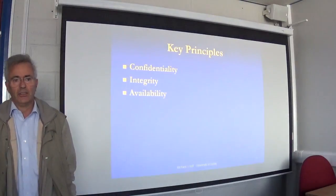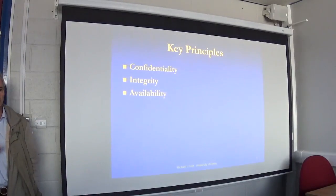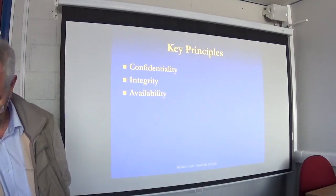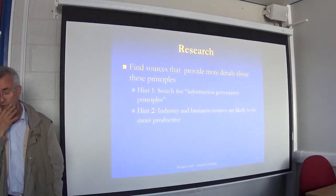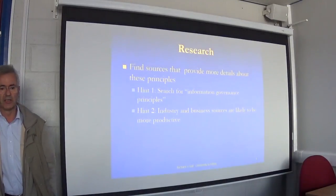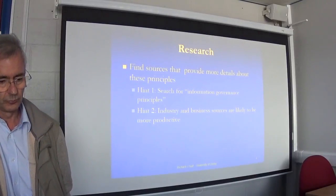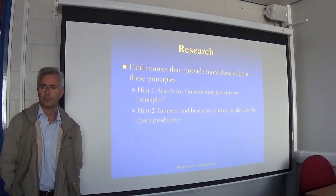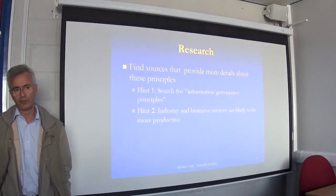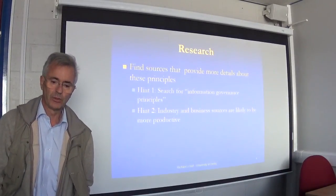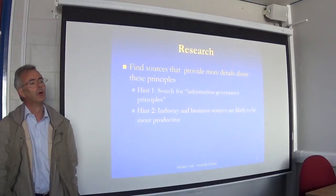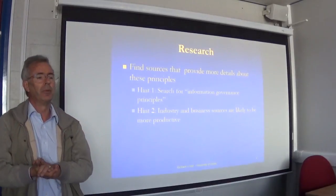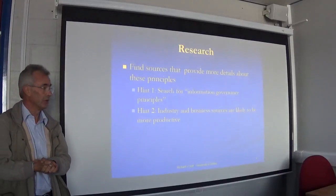In terms of 99%, forget it — you're looking at 99.999% availability is what you should be contracting for. So the first challenge you have today for the seminar is some serious levels of research. You need to find a whole lot of sources which you can put into your working bibliography in Harvard Standard, that will tell you more about those three principles — the CIA principles — just to set the framework about what it is that information governance is all about: confidentiality, integrity, availability.